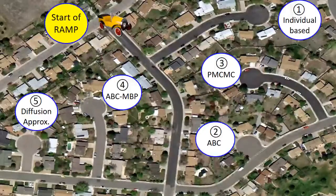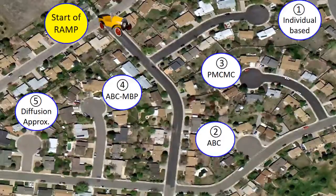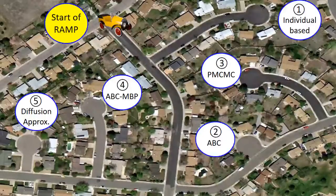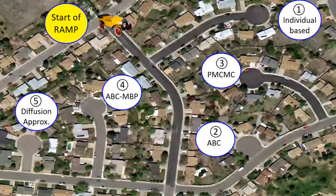We started by trying to apply the individual-based methods with which we were familiar, but whilst these worked well for small populations, they were found to not be sufficiently computationally fast to be applied at a nationwide level. So that proved a dead end, and we had to turn around and look for alternatives. ABC-type approaches and particle MCMC seemed attractive, but they too were found to have their limitations, and so this led us to developing some new techniques, which I'll talk about later.